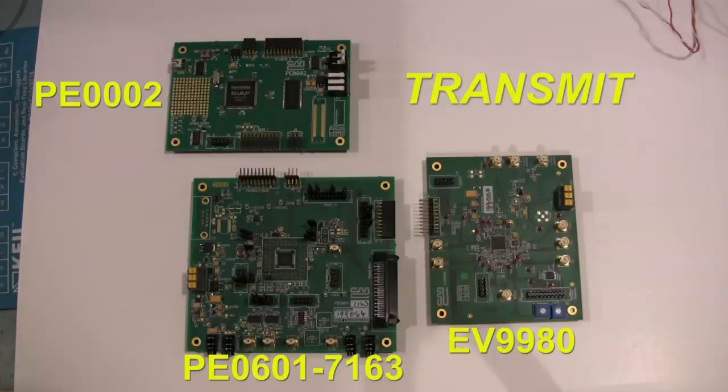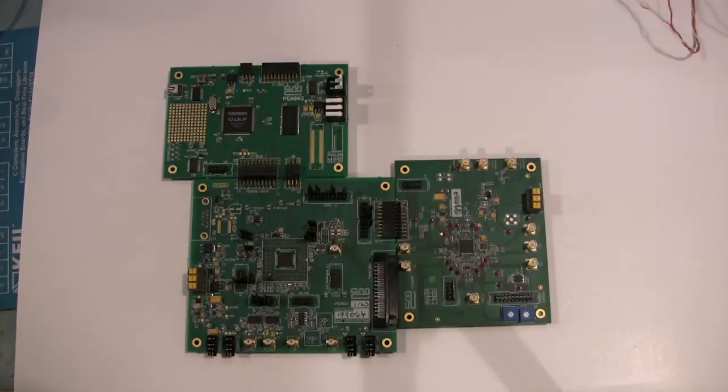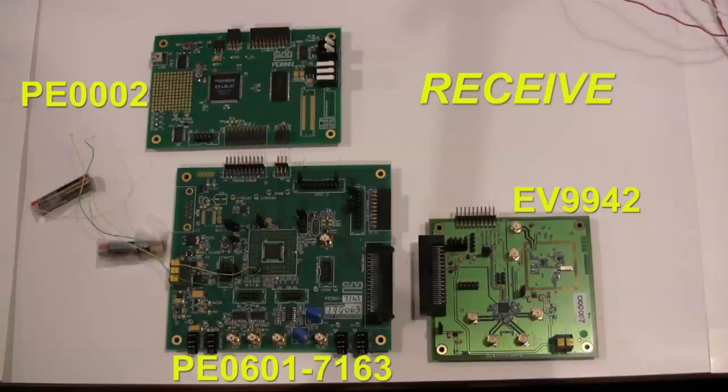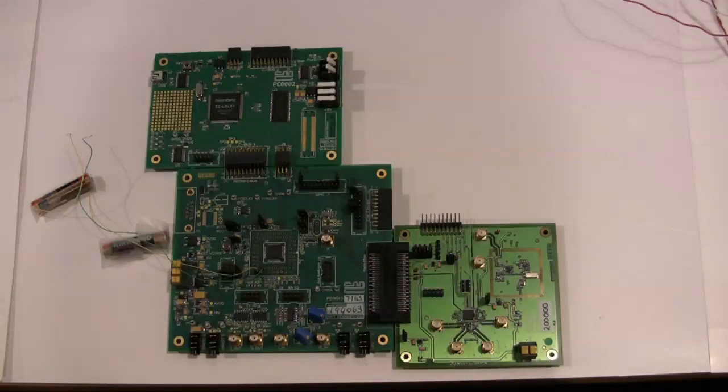The first step is to assemble the evaluation boards, so let's do that now. For the transmit side, connect the PE-0002 to the PE-0601-7163. Use the CBUS-1 port of the PE-0002 for the connection. To complete the transmit side, connect the EV9980 to the PE-0601. Now to the receive side. Connect the second PE-0002 to the second PE-0601 board. Use the CBUS-1 port of the PE-0002 for the connection. To finish the receive side, connect the EV9942 to the PE-0601 using the J14 RF connector.